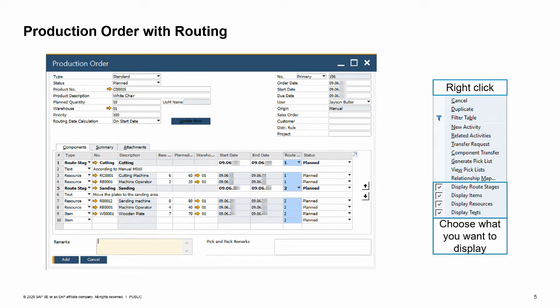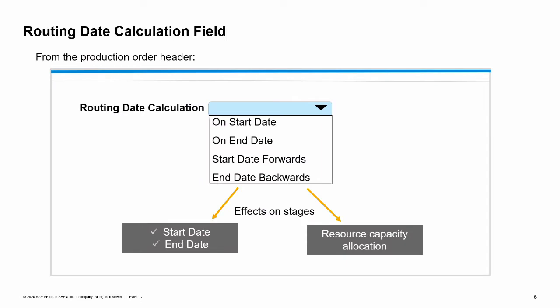In addition, production orders with routing allow optional automated calculation of date dependencies between the routing stages. The system can automatically schedule the start and end dates of both item and resource components to more relevant dates. This will be further discussed in the next slides. When using production orders with routing, it is important to understand how the routing date calculation field and function works. This definition in the production order can affect the start date and end date of each row in the production order, as well as the resource capacity allocation in the row.